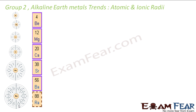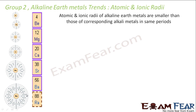Now we will talk about the ionic and the atomic radius. The atomic and ionic radius increase as we go down the group — a similar trend as we had in alkali metals. As we go down the group, the number of shells increases and so the size increases. But if you compare the alkaline earth metals with alkali metals, you will see that the atomic and ionic radius of the alkaline earth metals is less than that of alkali metals.